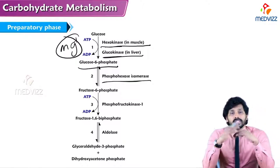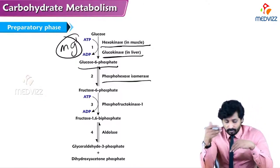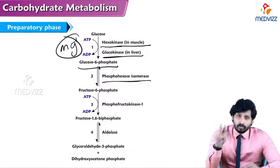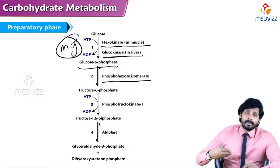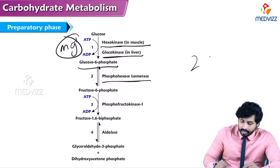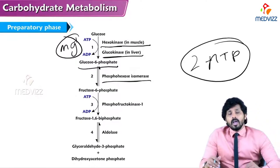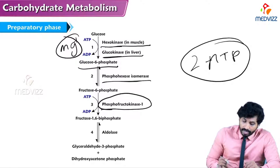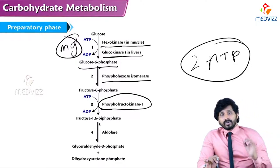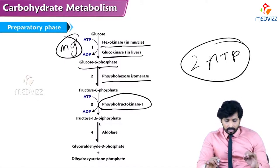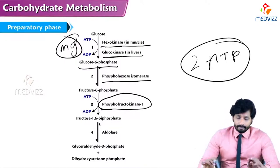In the third step, fructose-6-phosphate is converted into fructose-1,6-bisphosphate — a second phosphate group is added using another ATP. So far we have invested two ATPs total. The enzyme here is phosphofructokinase-1, which is the rate-limiting enzyme of glycolysis. Its regulation will be discussed in detail separately.